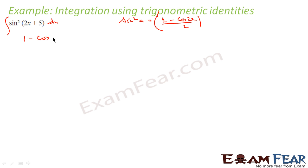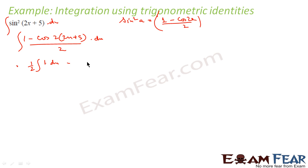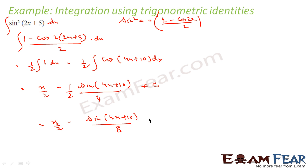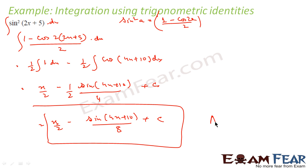I am doing this because cos 2a is easy to integrate than sin square a. So I will convert sin square into cos formula. This will become integral of 1 minus cos of 2 into (2x plus 5) by 2 dx. This becomes 1 by 2 into 1 dx minus 1 by 2 into cos of (4x plus 10) dx. Solving: 1 dx becomes x, so x by 2 minus sin(4x plus 10) divided by 4, and 1 by 2 was already there. The answer is x by 2 minus sin(4x plus 10) by 8 plus constant.